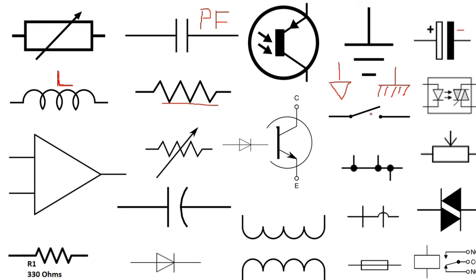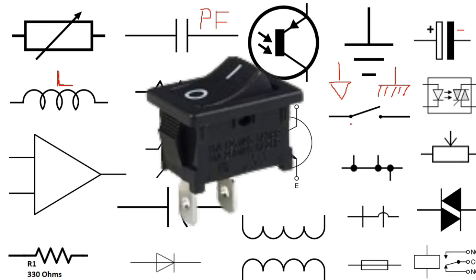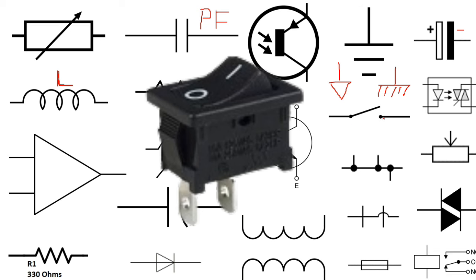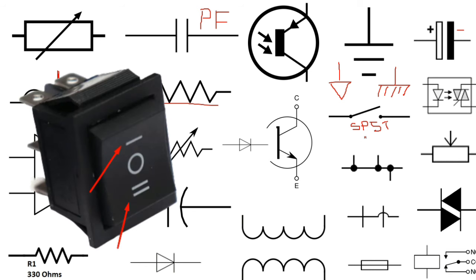This is a switch — a normal switch with single throw. We have here one throw and one pole, so this is single pole, single throw. Because sometimes you can find a switch with two poles or two throws, so we have single pole single throw, double pole, double throw, etc.